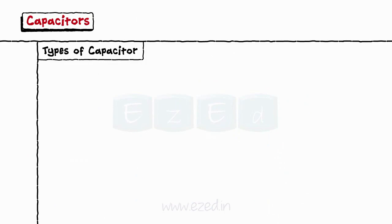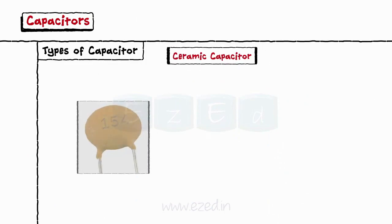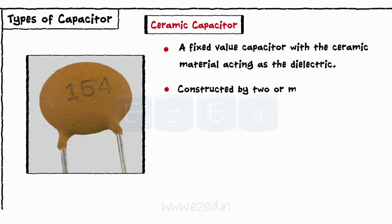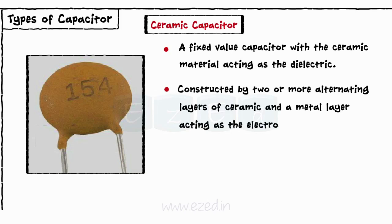The next capacitor is the ceramic capacitor. A ceramic capacitor is a fixed value capacitor with the ceramic material acting as the dielectric. It is constructed by two or more alternating layers of ceramic and a metal layer acting as the electrode. Ceramic capacitors have a high dielectric constant and are available so that relatively high capacitances can be obtained in a smaller physical size.